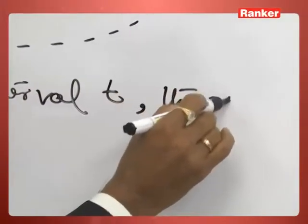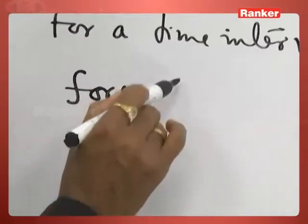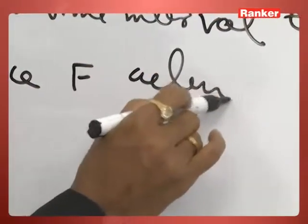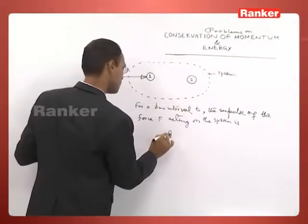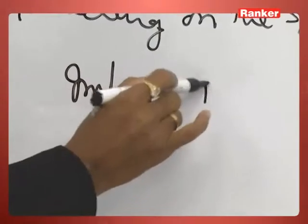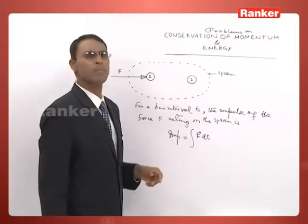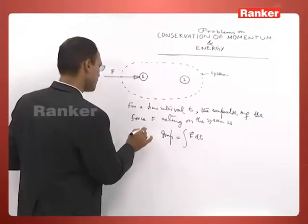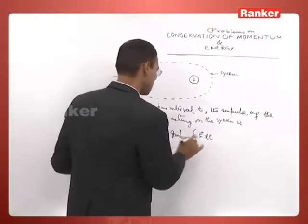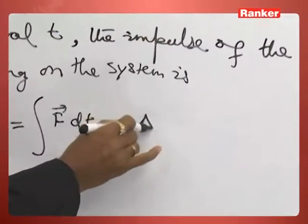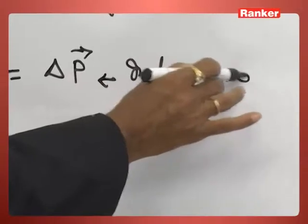The impulse of the force acting on the system is given as: impulse is equal to the time integral of the applied force. We can call it net impulse because this is the net force acting on the system from outside. The net impulse is equal to the change in momentum of the system. This is what we call the impulse-momentum equation.